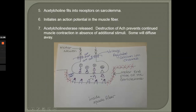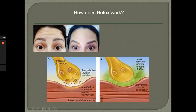We have walked through the process of excitation at the neuromuscular junction: the action potential propagates from the neuron and is now spreading along the sarcolemma of the muscle fiber, which in turn will cause that muscle to contract. We're not quite there yet, but while we're here, let's talk about how Botox works.